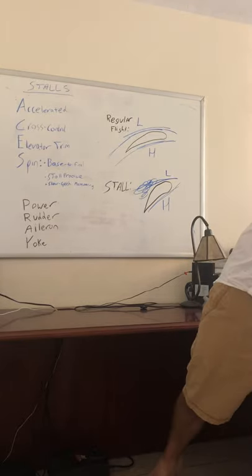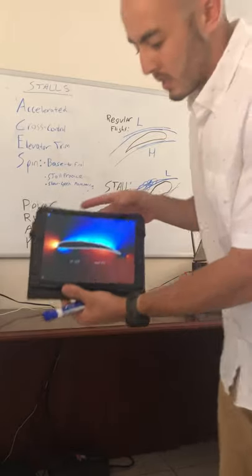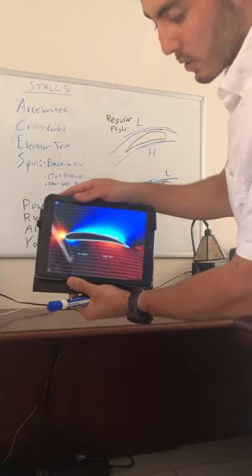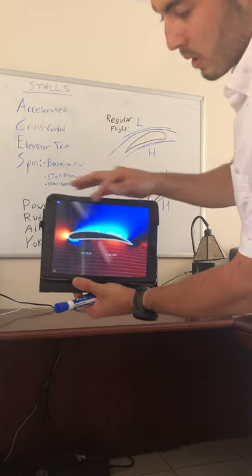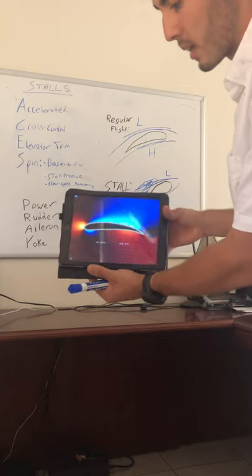I also have a visualization here. As you can see, the blue is our low pressure and the red is our high pressure. With that increased surface area over the top part of the airfoil, we're going to have that decrease in pressure, and that's where we're going to get lift.